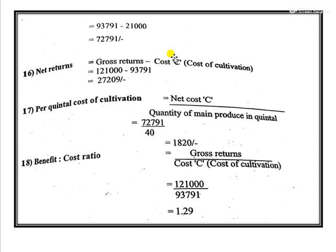Net returns are calculated as gross returns minus Cost C (cost of cultivation). The per quintal cost of cultivation is: Cost C ÷ quantity of main produce in quintals. The benefit-cost ratio = gross returns ÷ Cost C. For example, a ratio of 1.29 means that for every one rupee invested, a return of 1.29 rupees is obtained, indicating whether the crop is profitable or at a loss.